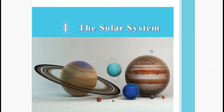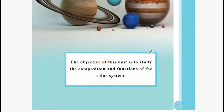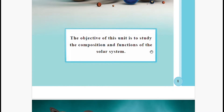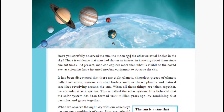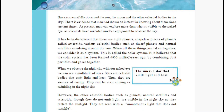The objective of this lesson is to study the composition — how the solar system is made — and the functions of the solar system, the role that it plays.